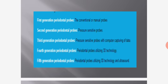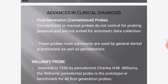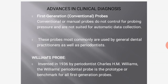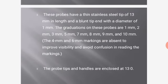First generation conventional probes do not control for probing pressure and are not suited for automatic data collection; they are most commonly used by general dental practitioners and periodontists. The Williams probe, invented in 1936 by periodontist Charles H.M. Williams, is the prototype for all first generation probes. It has a thin stainless steel tip of 13 mm length, blunt tip with 1 mm diameter, and graduations at 1, 2, 3, 5, 7, 8, 9, and 10 mm (4 and 6 mm markings are absent to improve visibility).